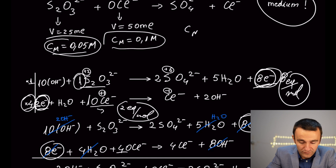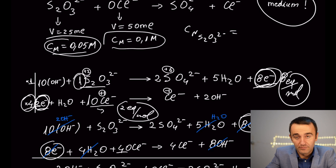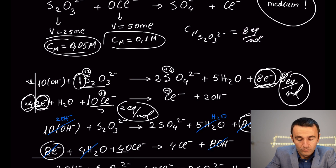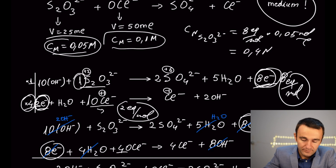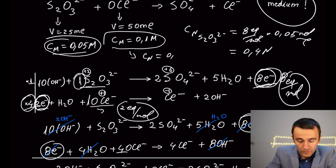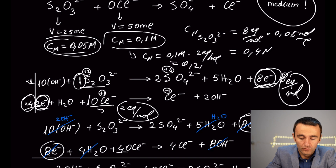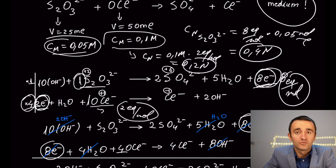To convert molar concentration to normality: for thiosulfate (S₂O₃²⁻), normality equals 8 equivalents per mole multiplied by 0.05 mol/L, giving 0.4 N. For hypochlorite (OCl⁻), normality equals 0.1 mol/L multiplied by 2 equivalents per mole, giving 0.2 N.